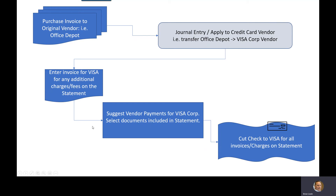So this is the goal. And then all we do is go right through the same process you would use for any vendor. We will go ahead and take that statement and start running down all the charges incurred throughout the statement cycle and include those in our suggest vendor payments. So we'll select those particular invoices, and then we're simply just cutting a check to Visa. So a lot of benefits come out of this.